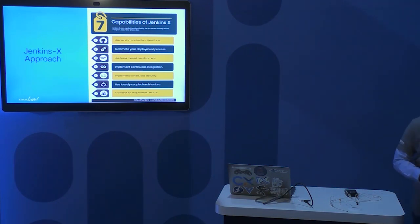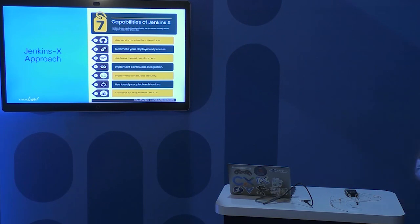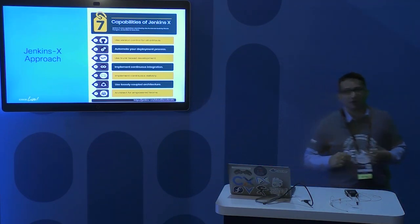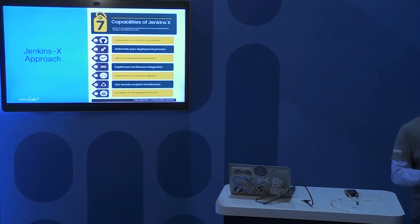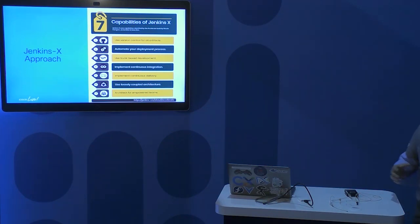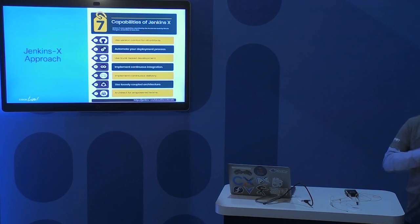The next capability is using loosely coupled architectures. When you start doing CI/CD and deploy your application as soon as it's promoted, Jenkins X uses the underlying Kubernetes features like rolling upgrades, health checks, and service discovery to help you do that. Finally, architecting for empowered teams — it's no longer required that everybody follows the same stack. Using JX, it gives you something called quick starts, so you can start using best practices for a particular language. Teams can choose what is good for them, what they are comfortable with and relevant to their business problems.